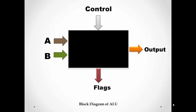We can consider the ALU as a black box, which has two inputs A and B, and some control signals that determine which operation will be performed between A and B — either addition, subtraction, or any other logical operation. After the operation is performed, there will be some output and a status, like whether any carry or overflow occurred, stored in the flags or flag register.